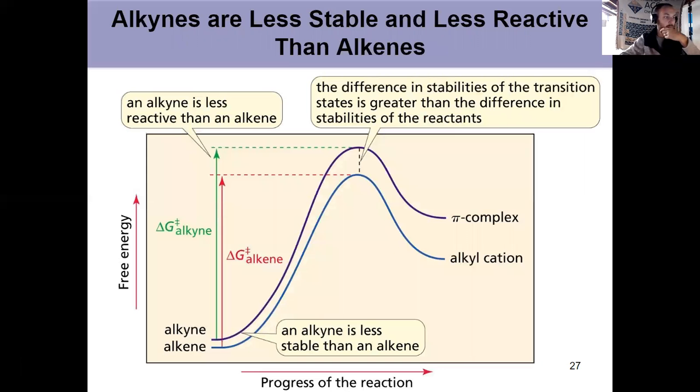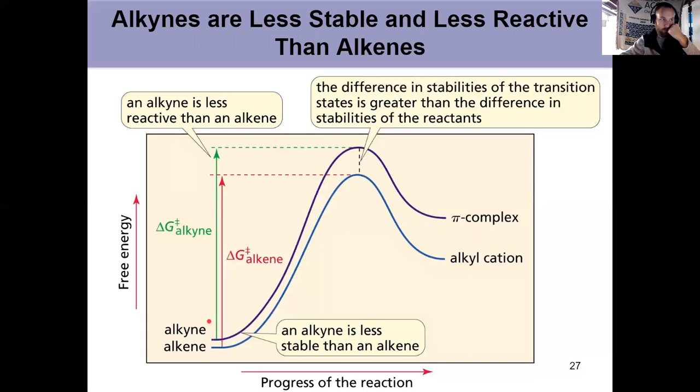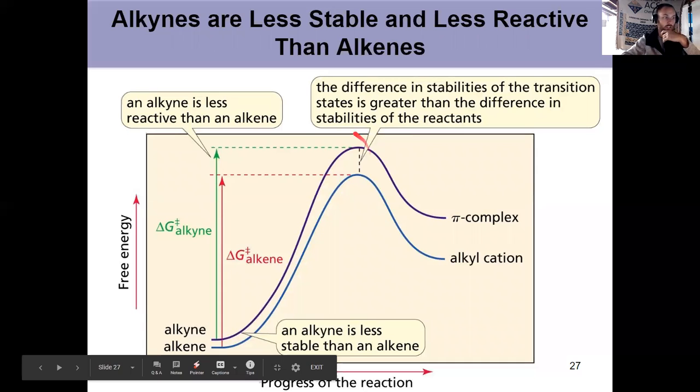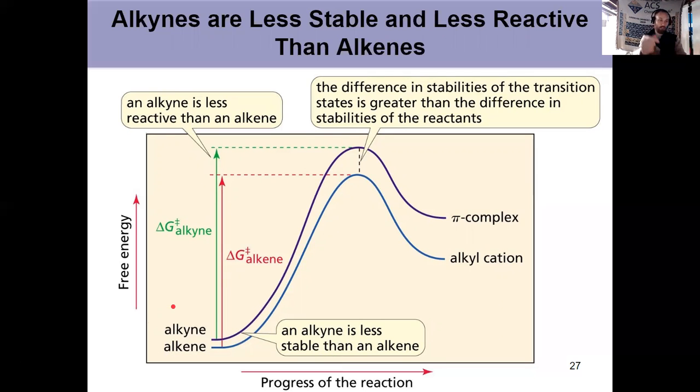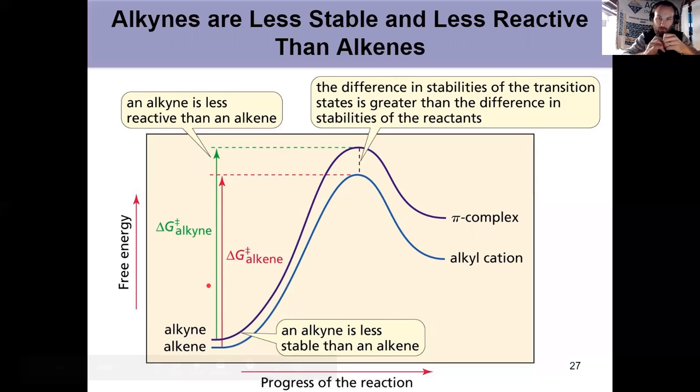Last little bit of theory. Alkynes are less stable than alkenes are. Notice they have higher Gibbs-free energy, but they're also less reactive because of the energy of that transition state. Normally, if something is less stable to begin with, it's more reactive. But because the energy for this pi complex is greater, alkynes are less stable and less reactive than alkenes were.